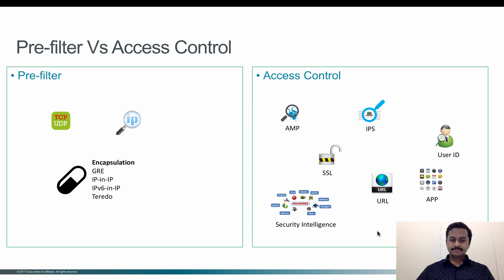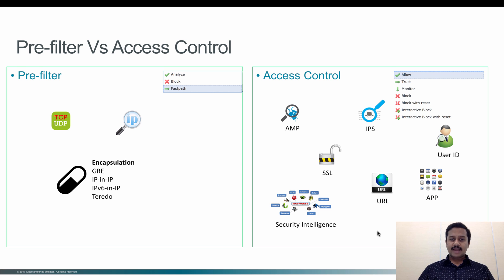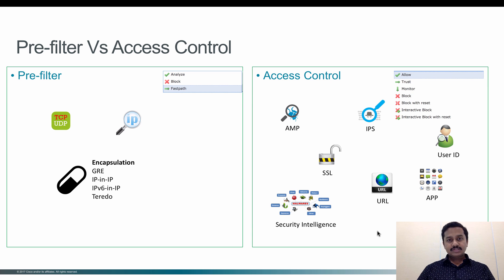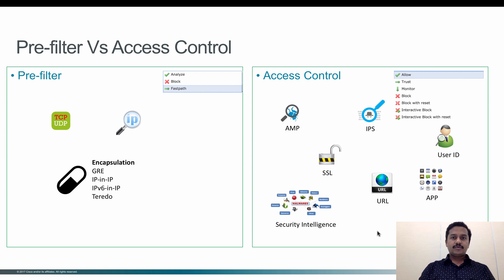Based on application, all sorts of L7 inspection can be configured on access control policy. On the action side in the prefilter policy, you have three actions: one is analyze, second is block, and then fast path. With fast path, if a rule matches based on source IP, destination IP, protocol, or port number, the traffic is allowed to exit the egress interface without any further inspection. This greatly reduces latency on a particular connection.